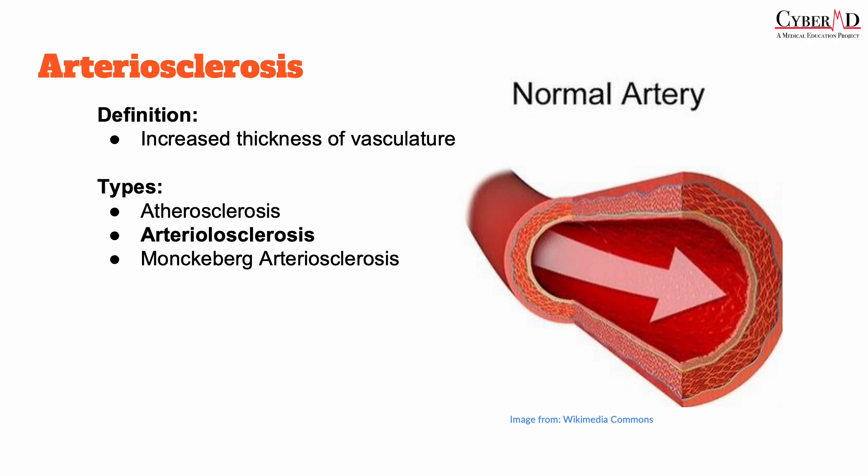Arteriolosclerosis is a type of arteriosclerosis. Remember that all forms of arteriosclerosis result in some sort of thickening of the walls of the vasculature. Arteriolosclerosis, in particular, is a condition characterized by the narrowing of the small arterioles, and it is divided into two types: hyaline and hyperplastic arteriolosclerosis.